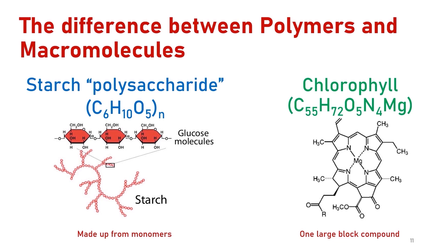From the structure, you can see that chlorophyll doesn't contain monomers. Instead, it's a chunk of one big compound. In other words, it is not made from joining monomers together.